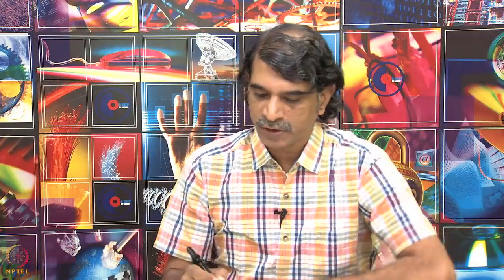Let us apply this concept to H¹Cl³⁵ and DCl³⁵. When I measure the IR spectrum, what I get is a fundamental frequency: for HCl, μ_naught_bar is 2885.1 cm⁻¹, and for DCl it will be 2091.1 cm⁻¹.